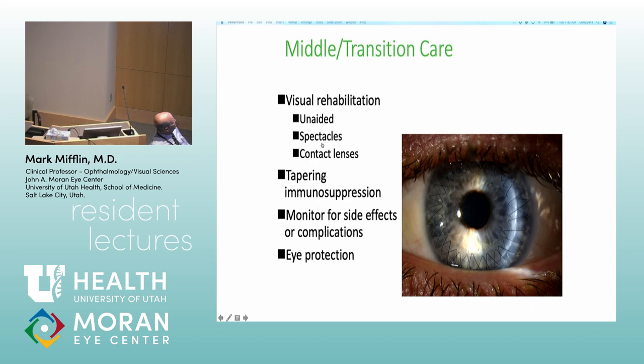In the middle phase — roughly one to six months out — you're trying to make the astigmatism less, maybe get the patient into glasses or contacts, starting to taper immunosuppression, and starting to take sutures out. Usually the patient is on cruise control, unless something happens like getting hit in the eye by a laundry basket and rupturing it. Eye protection — enough said.